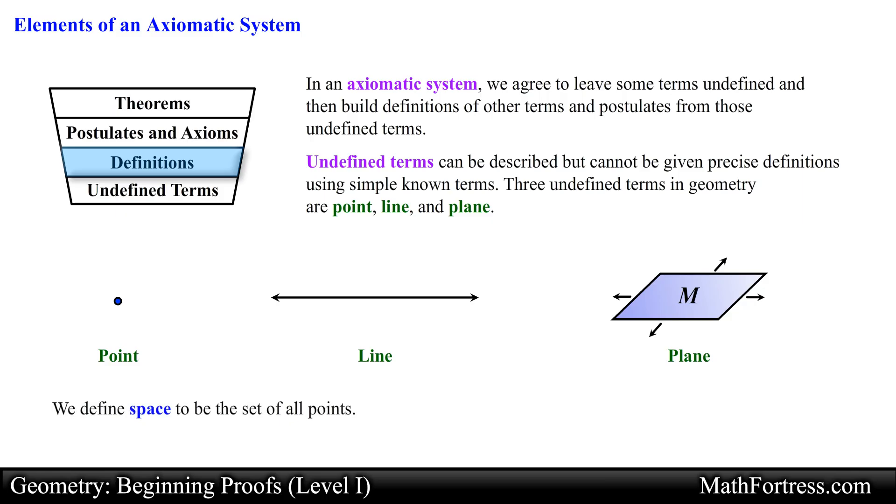We define space to be the set of all points. Any collection of points is called a geometric figure. In particular, lines and planes are composed of points and hence are geometric figures.